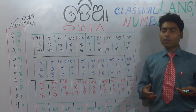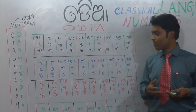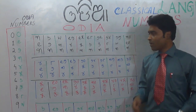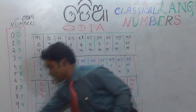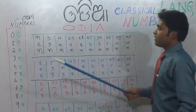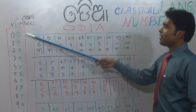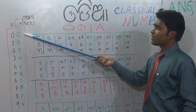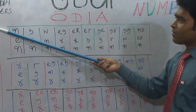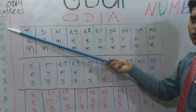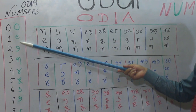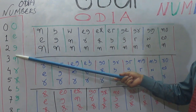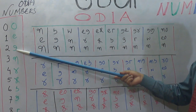Today we'll learn about the three, four, five, and six multiplication tables. You just see these are the numbers: zero means 'suna', one is 'eka', two is 'dui'.